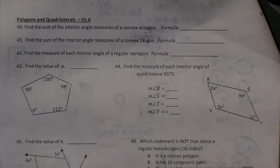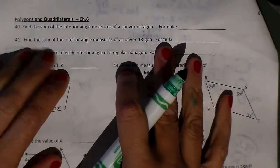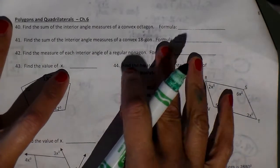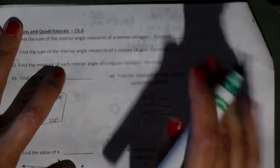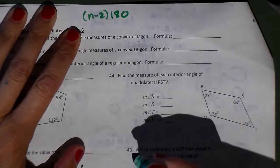Alright, we're on to number 40, which is polygons and quadrilaterals. To find the interior angle sum of a convex octagon, first of all, what is the interior angle sum of any polygon? If you remember, we showed you how you could divide a polygon into triangles.